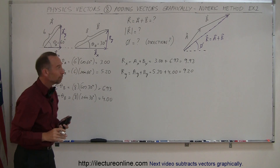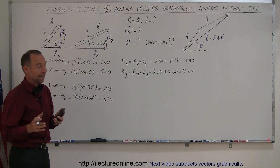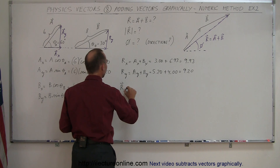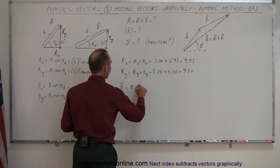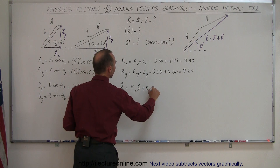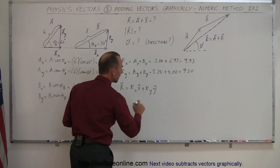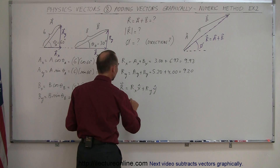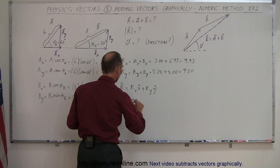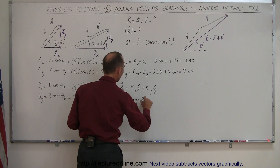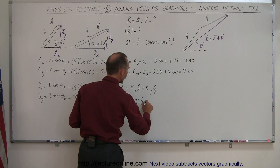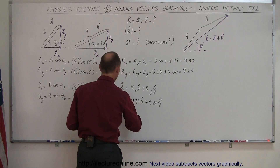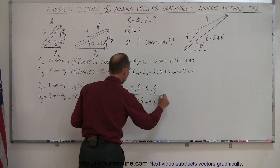Now we have the x and y components of the resultant, and we can write it in vector format. R equals R sub x in the x direction plus R sub y in the y direction. Plugging in the values: R equals 9.93 in the x direction plus 9.20 in the y direction. That is your resultant vector.